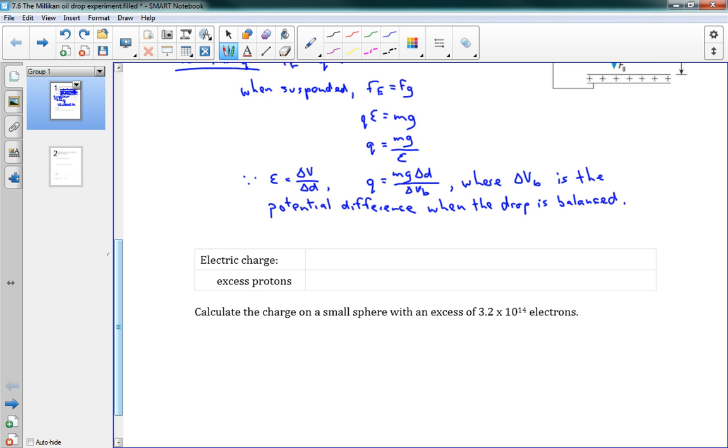And to get that, he got M by dropping the drop, by releasing the drop. So he removes his electric field, just lets it fall straight down, measuring the final speed, measuring VF, and then finding, using that information and the time and everything to get the acceleration to get the FG and Fair, the air resistance. And using that, he is able to find the mass.